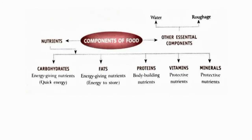What are the basic components of food? There are five nutrients, and the two essential components of food are water and roughage. Nutrients are the chemical substances present in food. The five nutrients are carbohydrates, fats, proteins, vitamins, and minerals. Carbohydrates and fats are called energy-giving nutrients, proteins are called body-building nutrients, and vitamins and minerals are called protective nutrients.